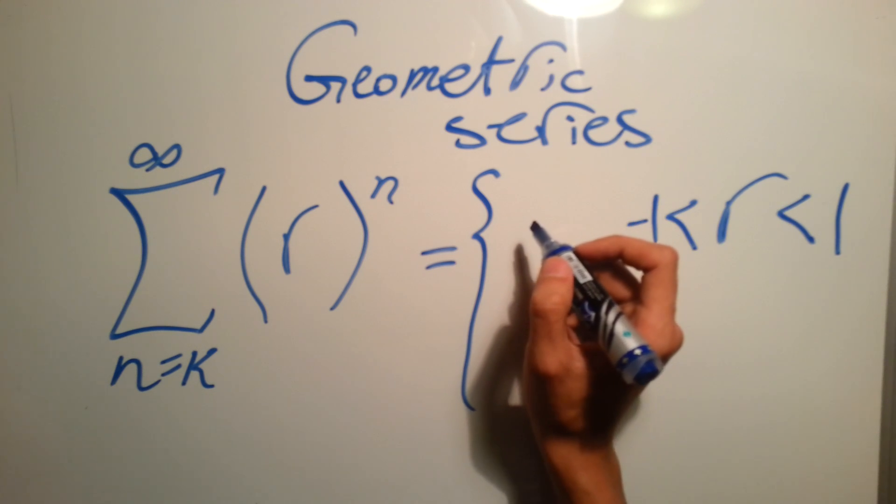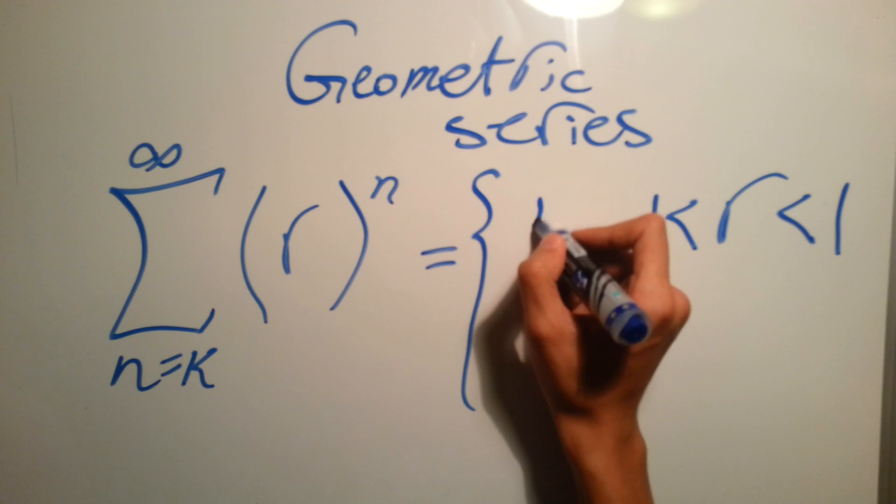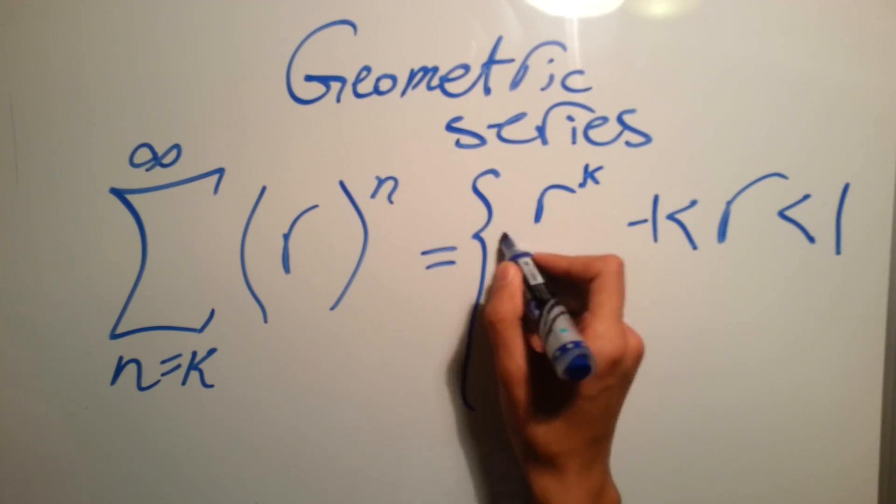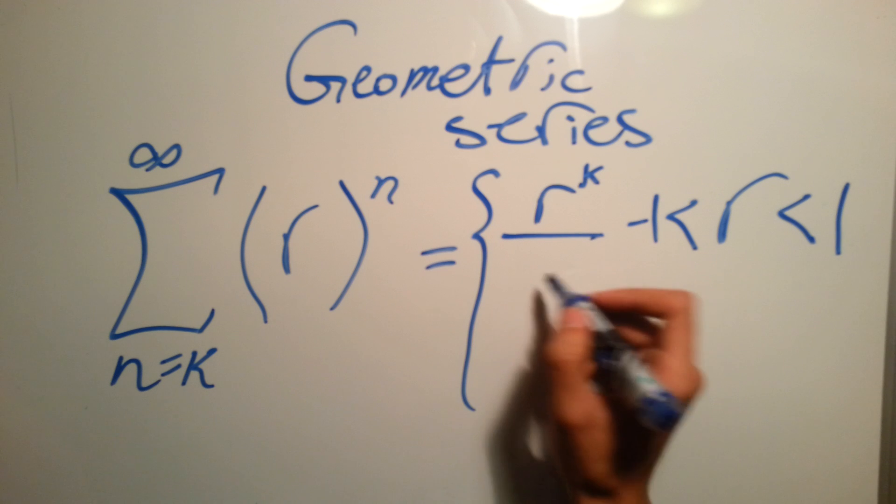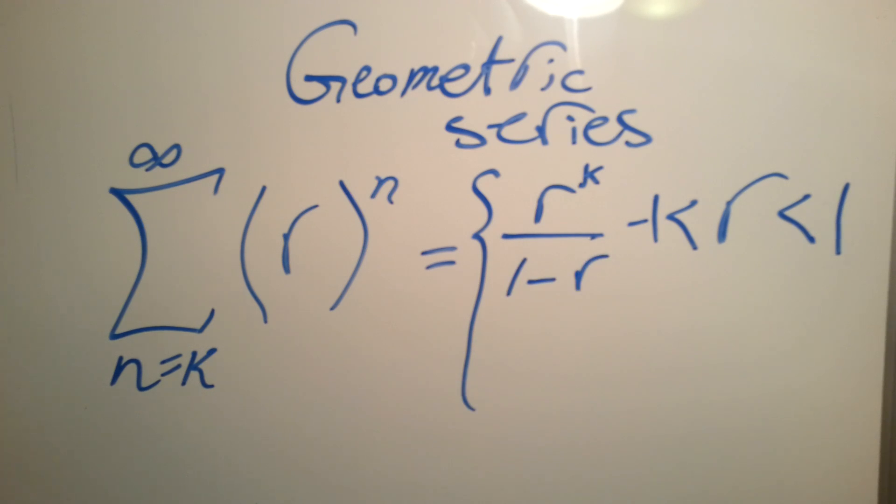r^k over (1 - r). On the other hand, it's divergent otherwise.